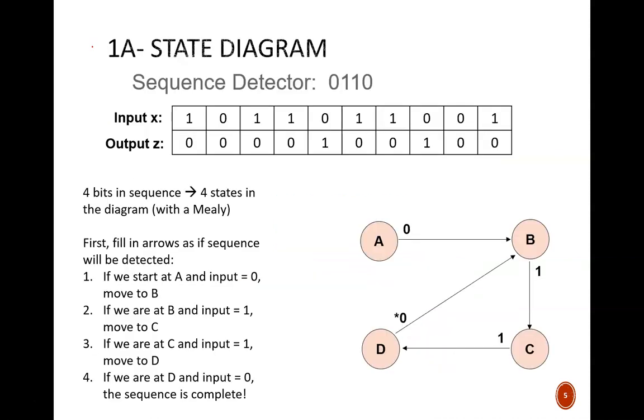Now, let's try to draw the state diagram for this machine. Since there are four bits in the sequence, there will be four states in the diagram for this Mealy machine. A Moore machine would require one more state. Let's name those states A, B, C, and D.